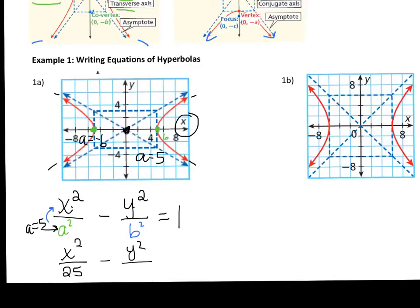Now we just have to figure out the number for b. It looks like that point is at 3, so b equals 3, and b squared is 9. We plug in 3, giving us 9 underneath the y squared. So that's the final answer.